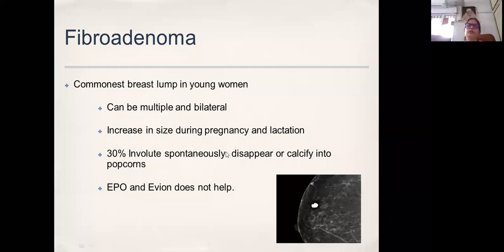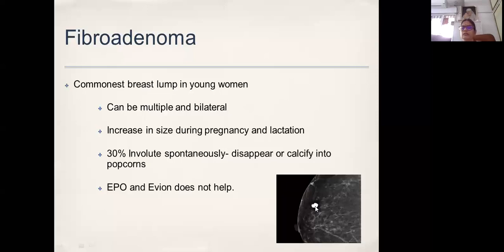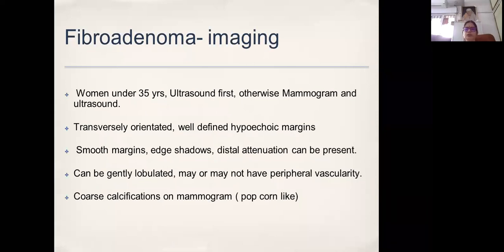Some fibroadenomas — about a third of them — may involute, particularly if they are small. They may involute like normal breast tissue and disappear spontaneously. Some undergo myxoid degeneration and the inspissated content calcifies over time, becoming popcorn-like macro-calcifications in the breast. Any amount of evening primrose oil or vitamin E does not help in making these fibroadenomas go away.